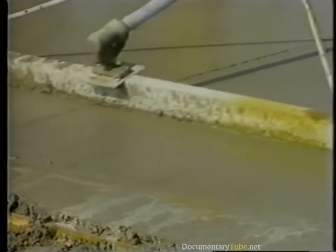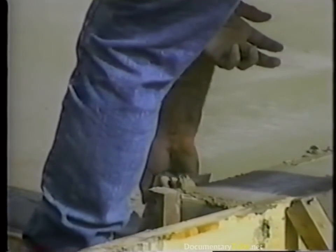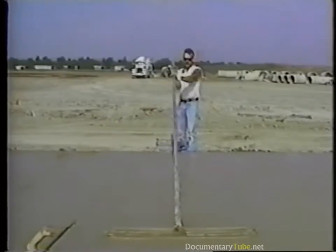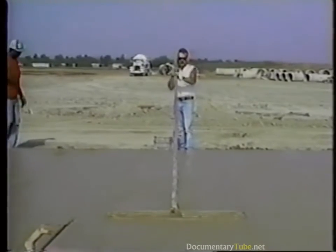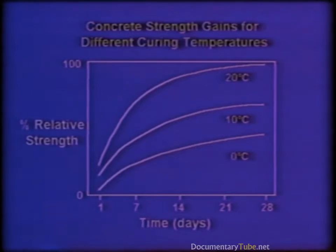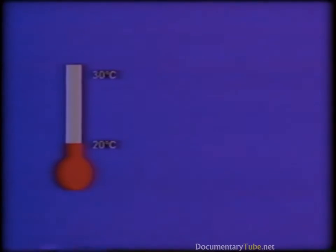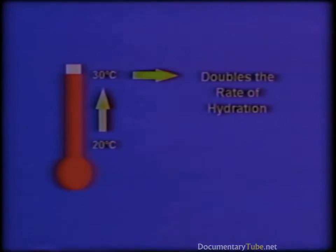The rate of hydration can be controlled several ways. Factors such as temperature, cement type, and admixtures influence the rate. One of the most important variables is the ambient temperature. High temperatures speed up hydration so that setting is faster, as well as subsequent strength development. The opposite occurs when the temperature is lowered. A good rule of thumb is that for every 10 degrees Celsius change in temperature, the rate of hydration is changed by a factor of two. For example, an increase in temperature from 20 degrees Celsius to 30 degrees Celsius doubles the rate of hydration.